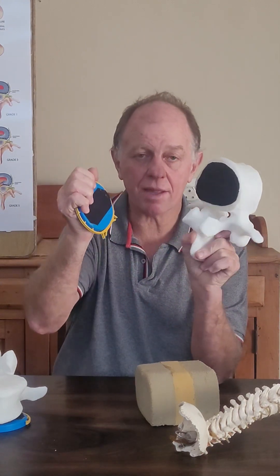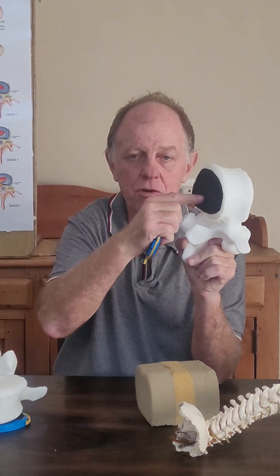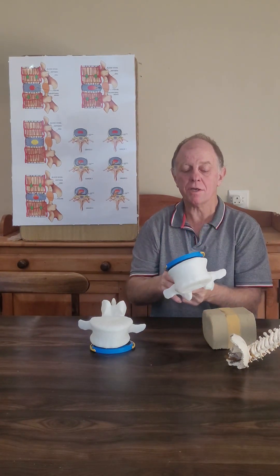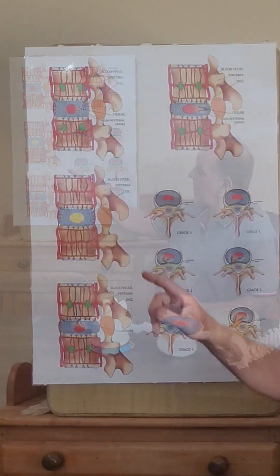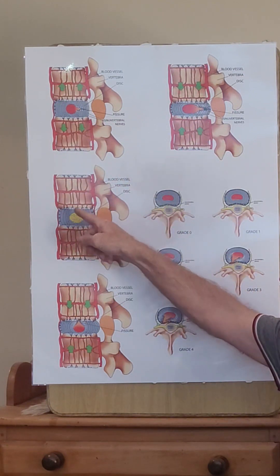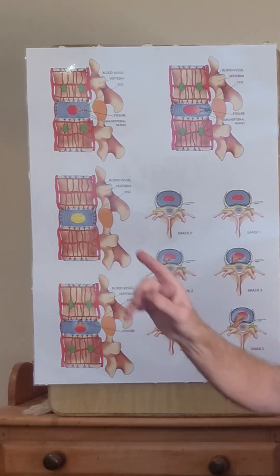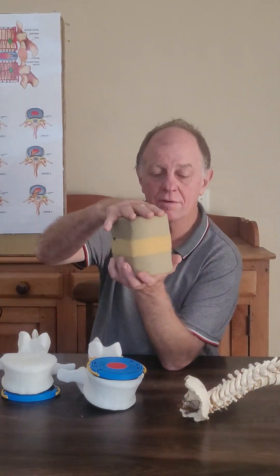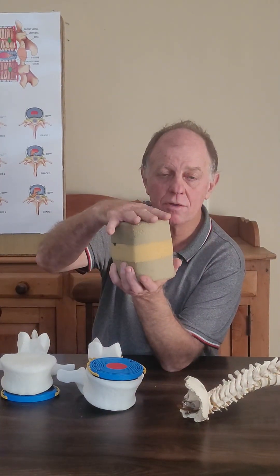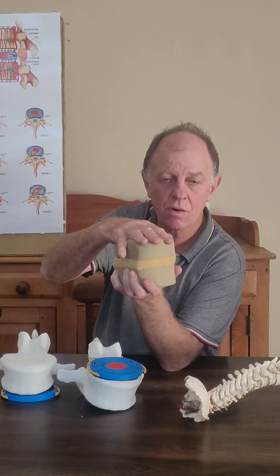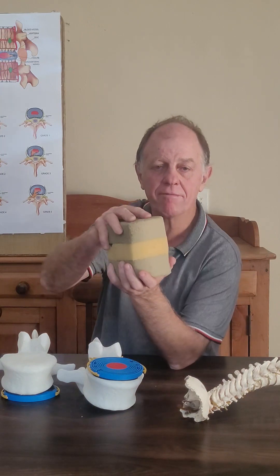Between the disc and the vertebrae is a nutrient interface — a very thin layer. The blood supply to the disc is via blood vessels that go up and down to the nutrient interface, with a little bit of blood from the side. But when it gets to the nutrient interface, movement into the disc is via osmosis: water out, waste out, nutrients in, water in through that interface.